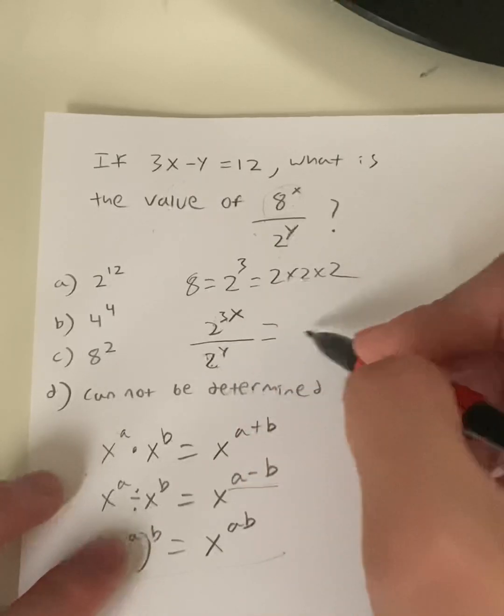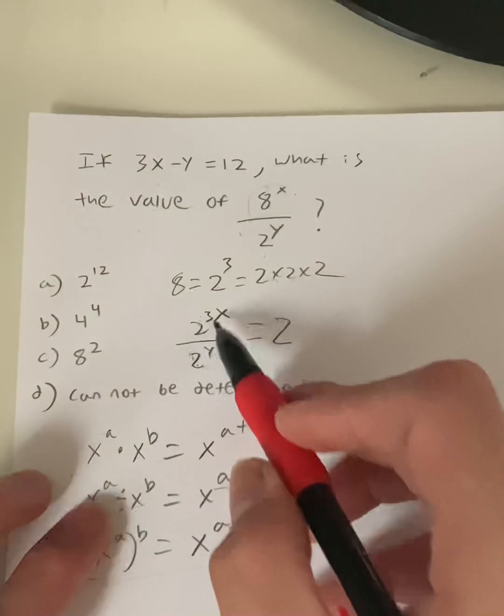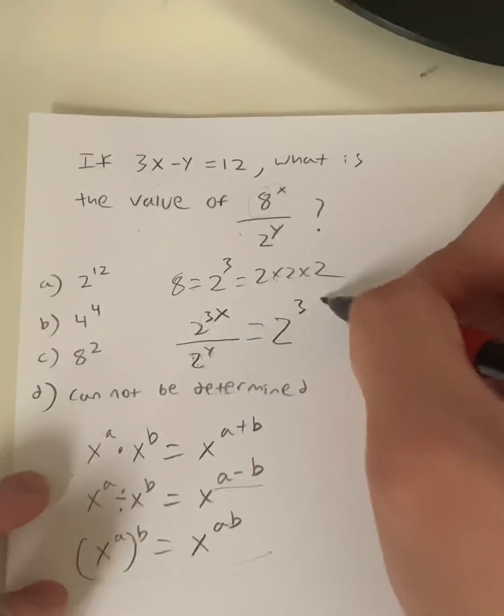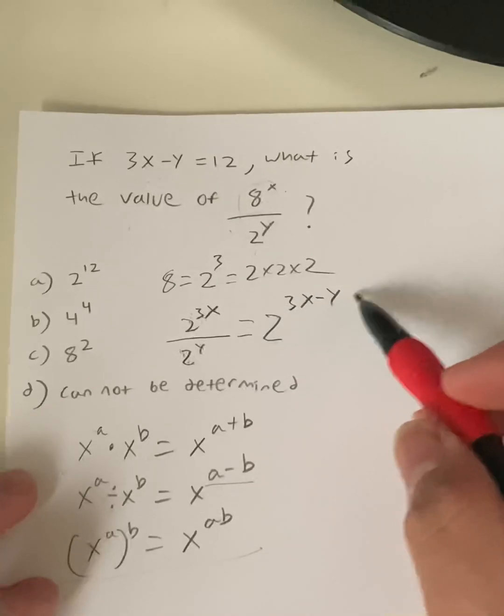So this equals the same base: 2^(3x - y). Now we end up with 2^(3x - y).